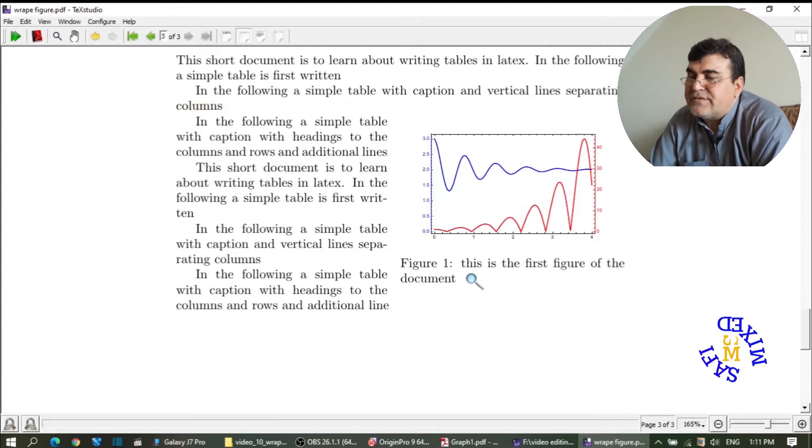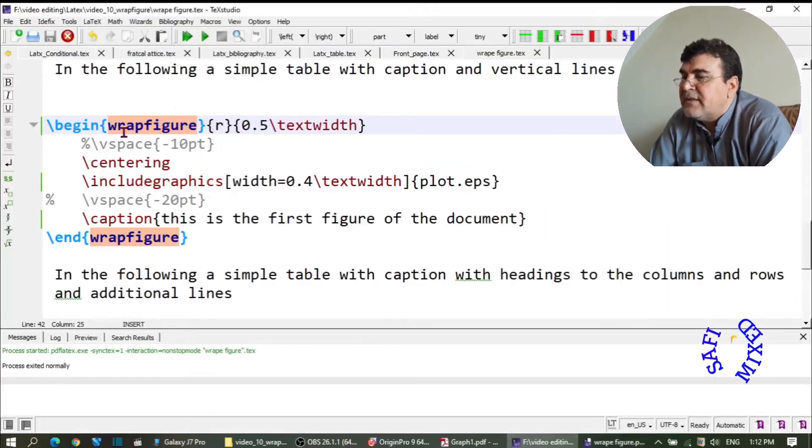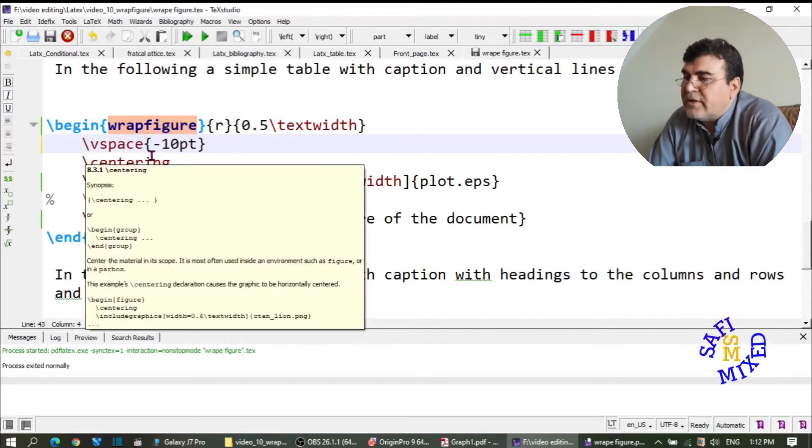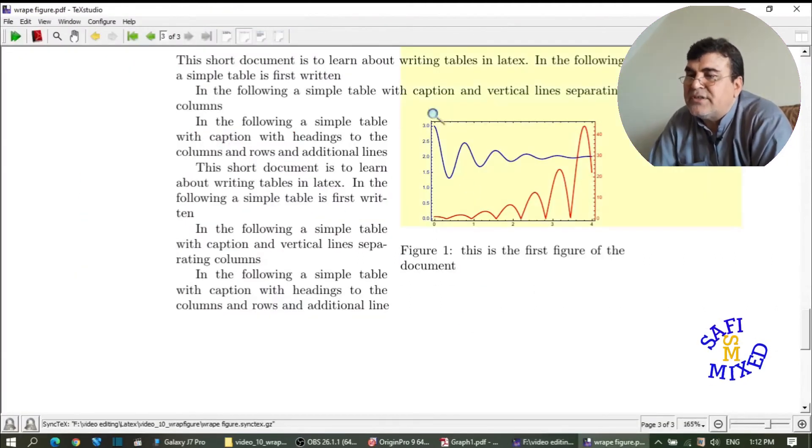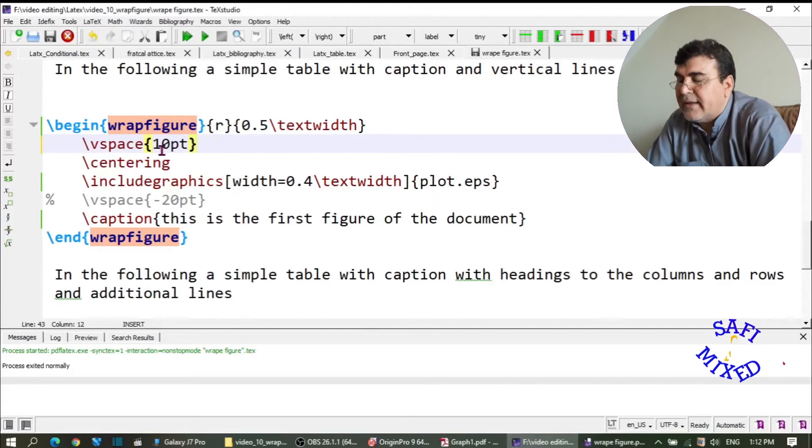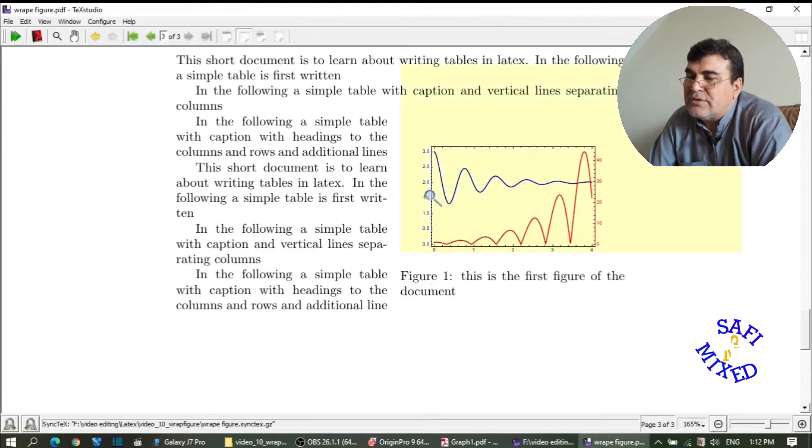and if you want to change the spaces up and down, you need to add vertical space below the begin command and above the caption. If I activate this with a negative sign 10 points, the top space will be reduced. You see it is now reduced. And I can enlarge by removing the negative sign and adding any number. So now that the space will be increased over here